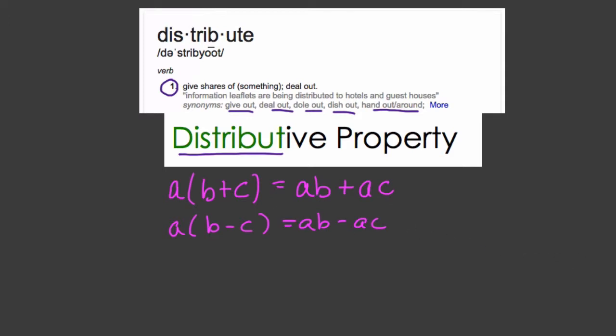What this might look like with numbers is something you already know of addition. Let's say we have 3 times 2 plus 1. This is 3 times 3, really, or 9. But it's the same thing as 3 times 2, which is 6, plus 3 times 1, which is 3.